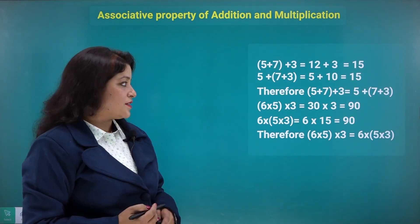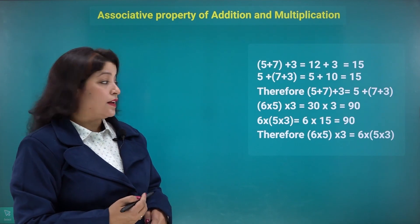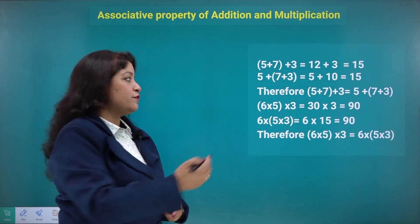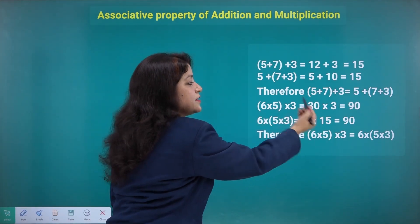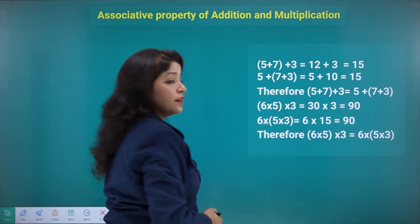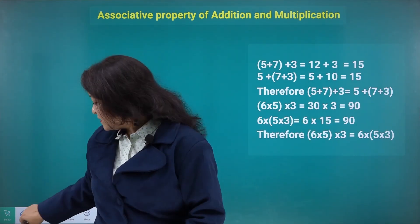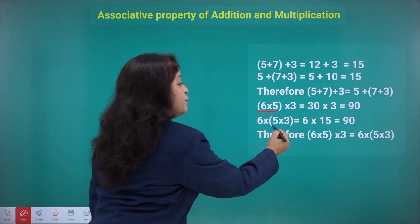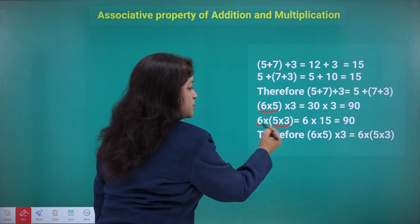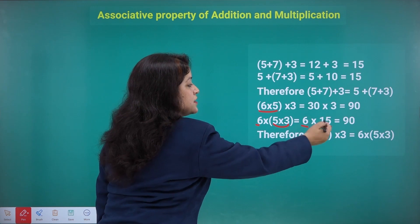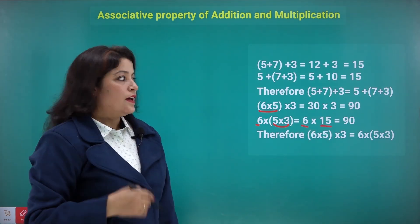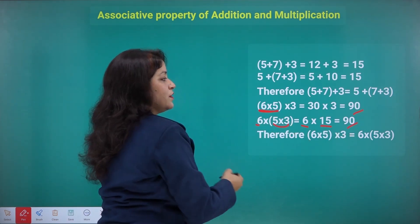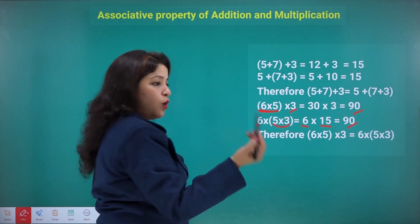Let's check for multiplication as well. While multiplying three numbers like 6, 5, and 3, we can first multiply 6 and 5 to get 30, then multiply by 3 to get 90. Similarly, if I make a group of 5 and 3 instead, 5 times 3 is 15, and 6 times 15 gives 90. In both cases, the result is the same.